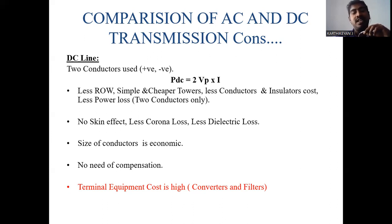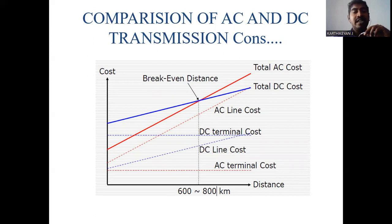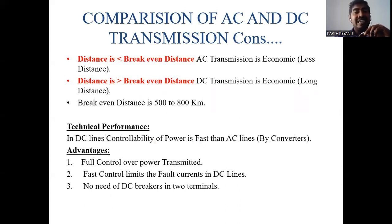There is no need for compensation devices in a DC transmission line, which is an advantage over AC. However, DC equipment cost is higher than AC. An AC line uses three conductors of the same size, while a DC line uses only two conductors. From the cost comparison graph, the total AC cost is higher than the DC transmission system for long distances. When the distance is less than the break-even distance, AC is more economical; beyond the break-even distance, DC is more economical.